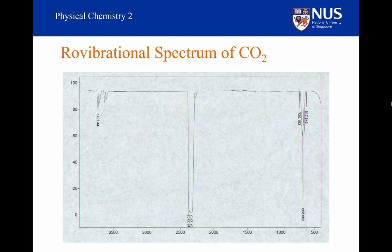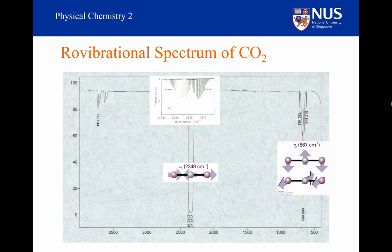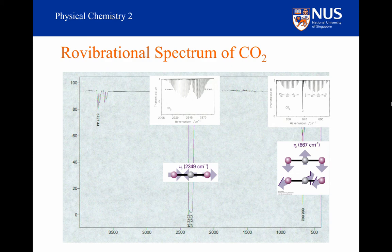This is the roto-vibrational spectrum for carbon dioxide shown at the start of Part 8. We've got a PR branch centred at around 2,350 wavenumbers. Because the spectrum is fairly low resolution, you are not able to pick out the rotational fine structure in the bands. But at high resolution, this is what we would see — this is associated with the asymmetric stretch, during which the dipole moment changes along the principal axis. For the bending mode, it is changing perpendicular to the principal axis, so now we get a Q branch appearing. Again, we cannot see the rotational fine structure unless we look at high resolution.